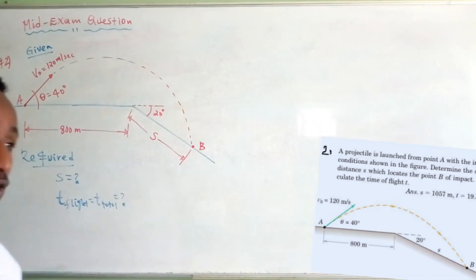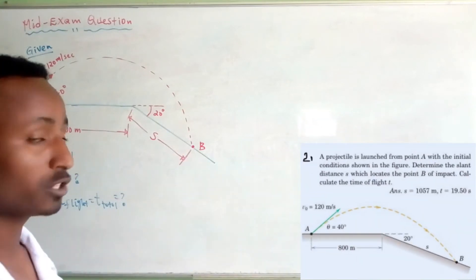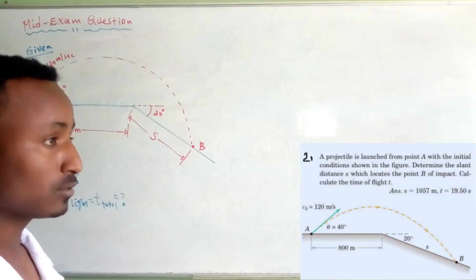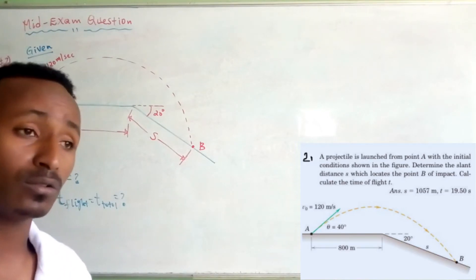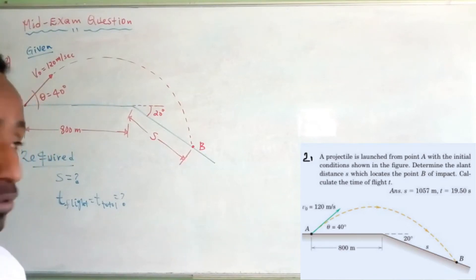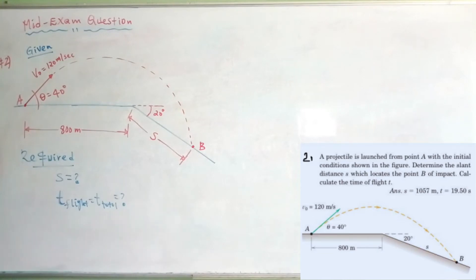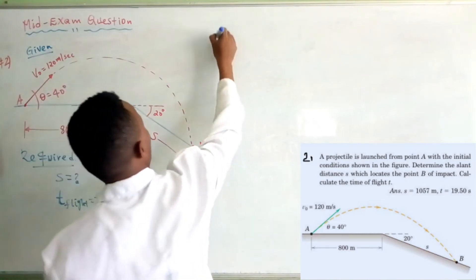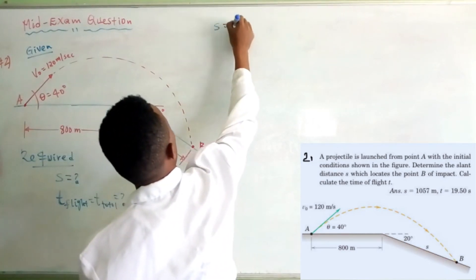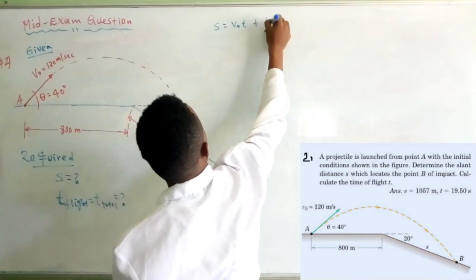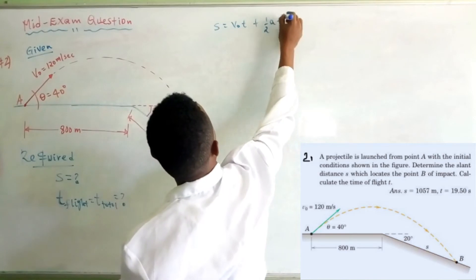For the kinematic motion equations, we consider motion in the vertical and horizontal directions. In order to solve all of these we can use this equation.